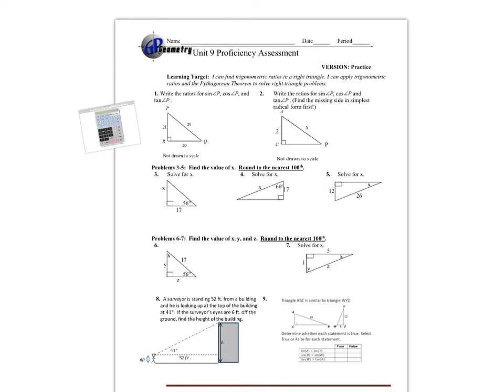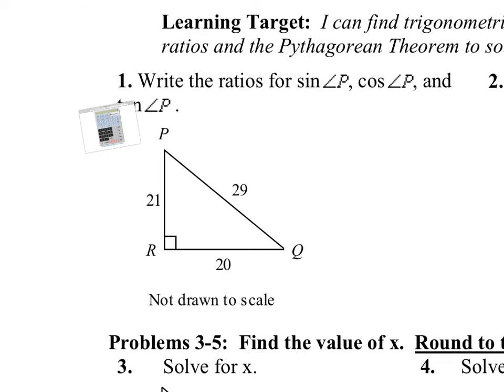We are going to look at our practice test for Unit 9 — some trigonometry. First, we're going to find some sine, cosine, and tangents. The key here is to remember SOHCAHTOA — that's just the acronym to remember sine, cosine, and tangent.